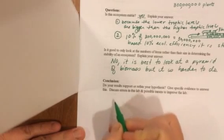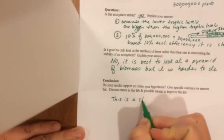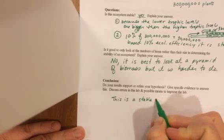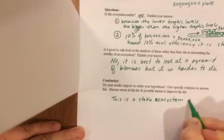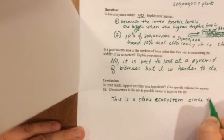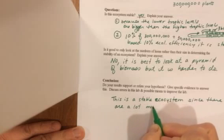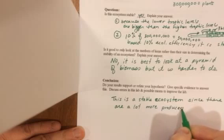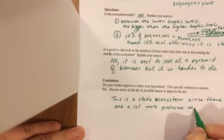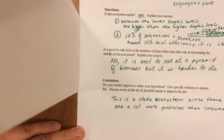That's the conclusion. And our answer would be this is a stable ecosystem since there are a lot more producers or autotrophs, another good name for them, than consumers, or producers than primary consumers and secondary consumers.